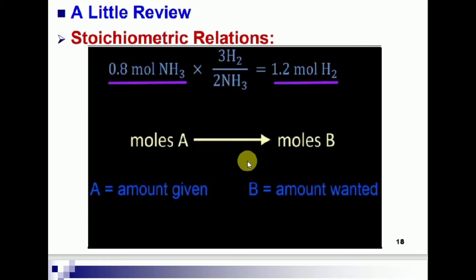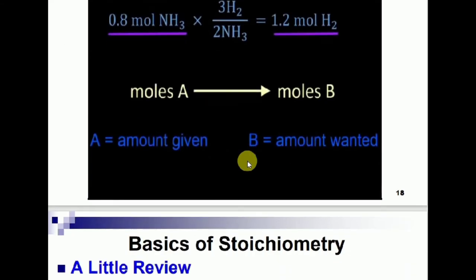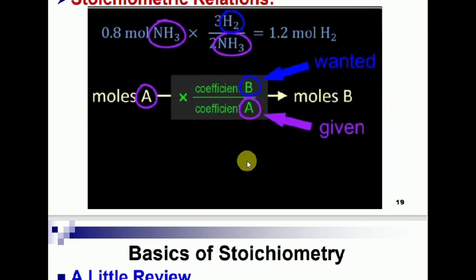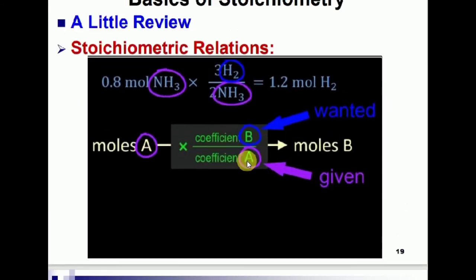The wanted amount goes in the upper position and the 'have' amount goes in the lower position, then multiply by the given amount. You can easily find the solution using this mole-mole calculation concept. Please pause this video and write the steps in your notebook.